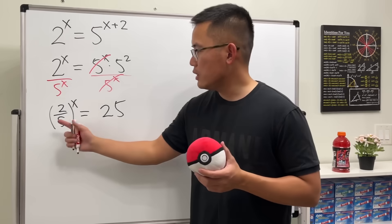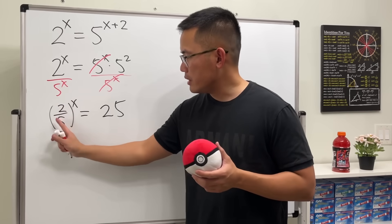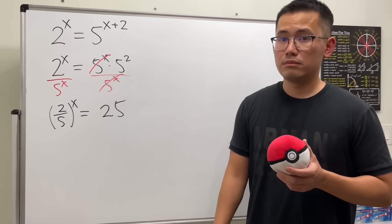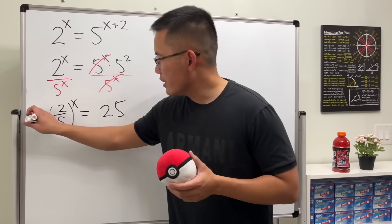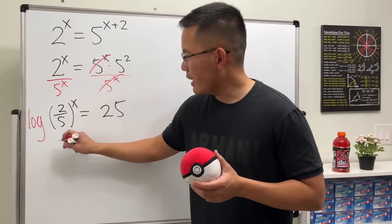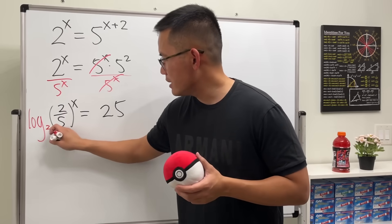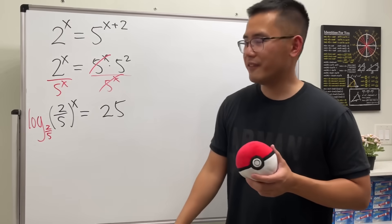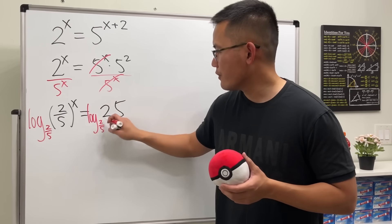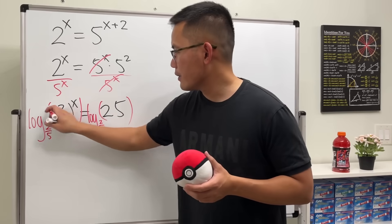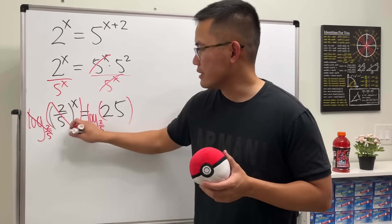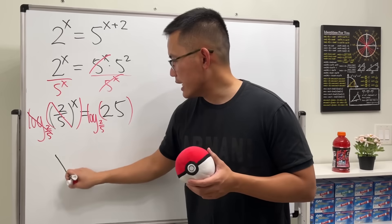Now, as you can see, we have some number b raised to the x power is equal to 25. So, how do we do this? We take log. We take log — but what base? The same base, namely 2 over 5. Right here, we do the same thing: log base 2 over 5. And on the left-hand side, this and that will cancel, so we just end up with x.